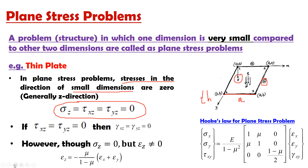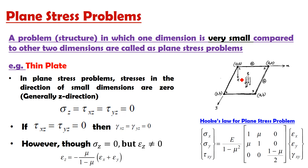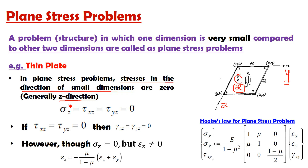If a different direction is used — for example, if thickness direction is represented by x and the other two dimensions by y and z — then stresses in the x-direction will be zero. That is why, in general, stresses in the direction of the small dimension are zero. That direction may be any direction, but generally it is taken as the z-direction, giving σz, τxz, τyz equal to zero.